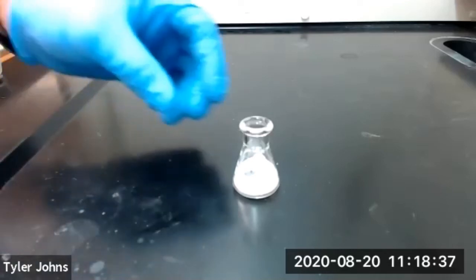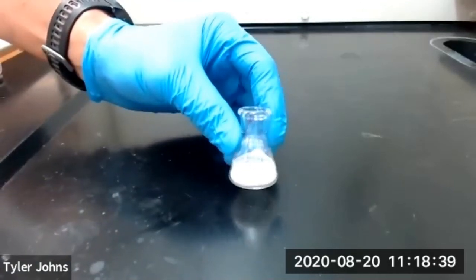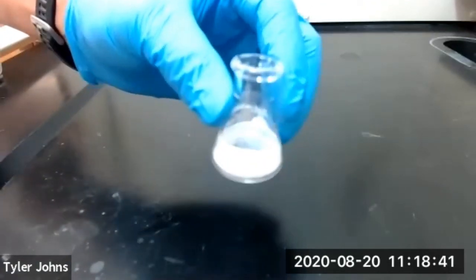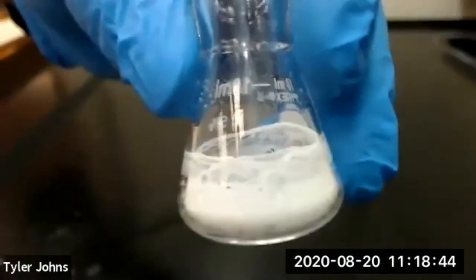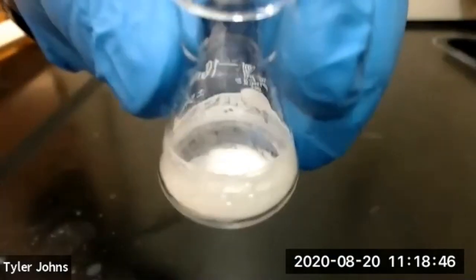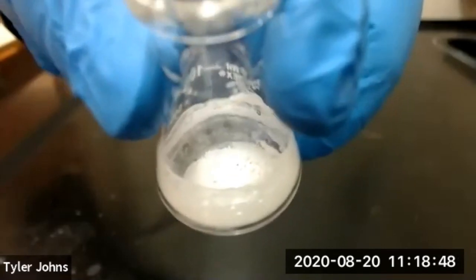We've evaporated all of the methylene chloride from our 10 milliliter Erlenmeyer flask. At this point we will weigh the flask to determine the amount of caffeine that was in our methylene chloride.